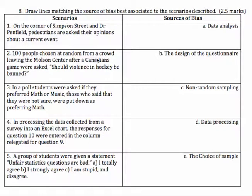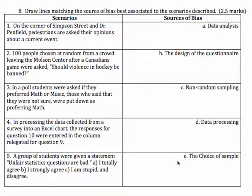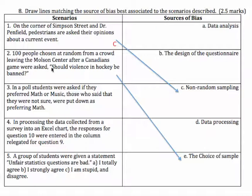Number two: 100 people chosen at random from a crowd leaving the Molson Centre after a Canadiens game were asked, "Should violence in hockey be banned?" The choice of the sample is not a very good choice, because you're looking at die-hard hockey fans, who traditionally prefer there to be a bit more violence in hockey. So number two matches better with E than C. Number one goes with C, and number two goes best with E — the choice of the sample is poor because we're choosing people leaving a hockey game.